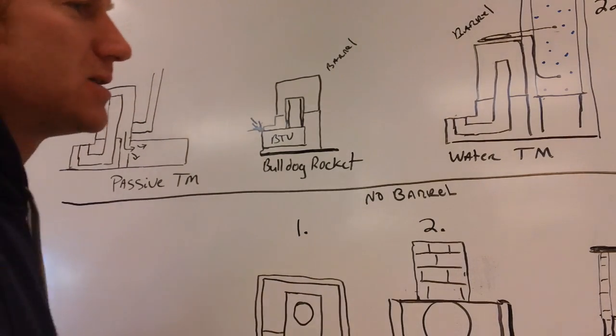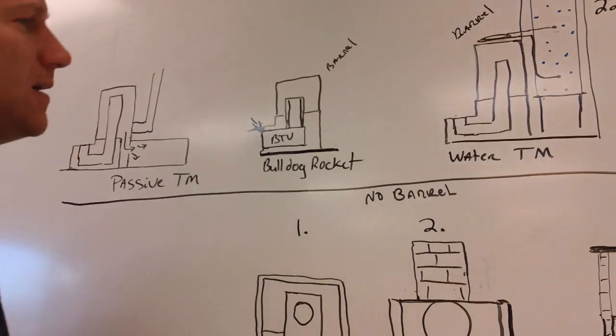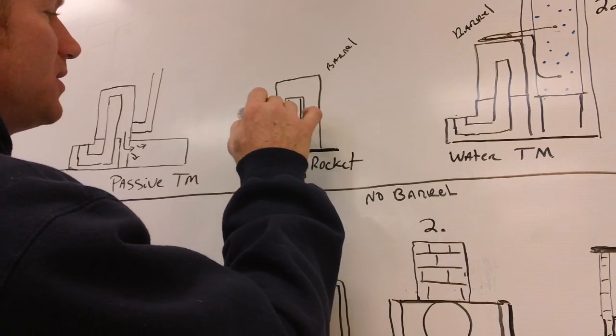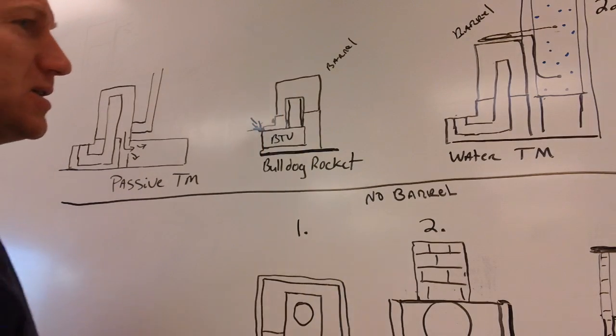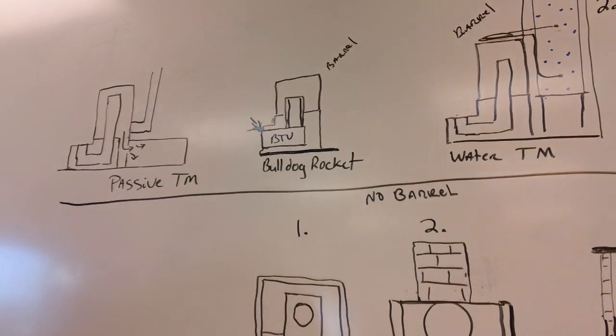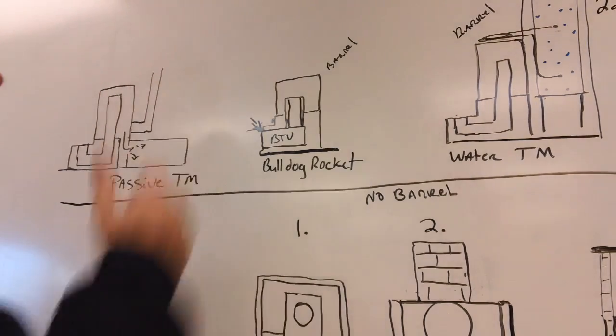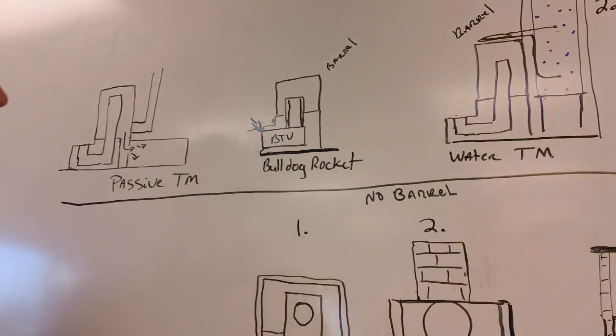I still challenge you guys to look at some of the nicest rocket stoves out there and you're going to see black right here in front of the burn chamber on these 6 and 8 inch downdraft rocket stoves. The bulldog is just a bigger burn chamber with a brick riser.